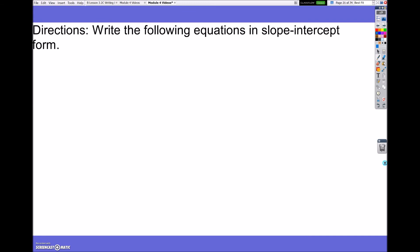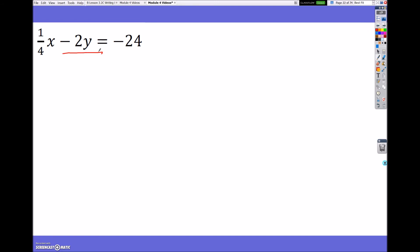All right. So, now it says, write the following equations in slope-intercept form. Some of this might be review, but some of it could be a tad tricky. So, we just want to make sure we're on the same page here. So, the first thing we want to do is try to get this negative 2y all by itself. So, the first thing I'm going to do is subtract 1/4 x on both sides.